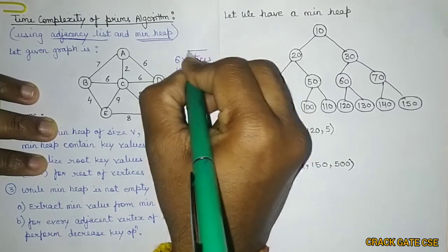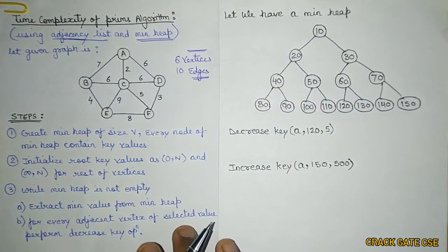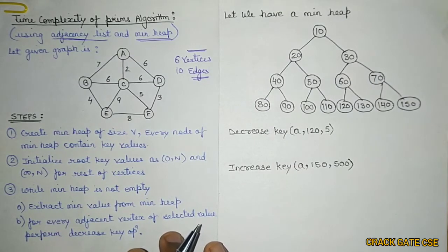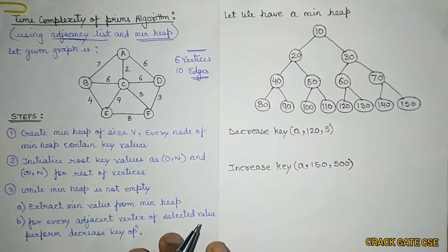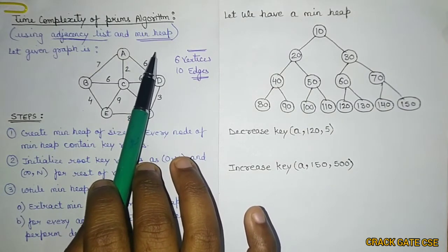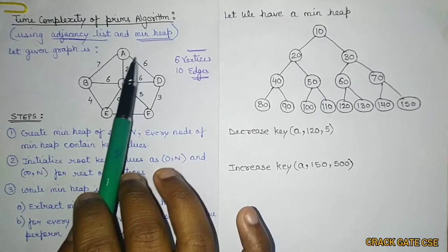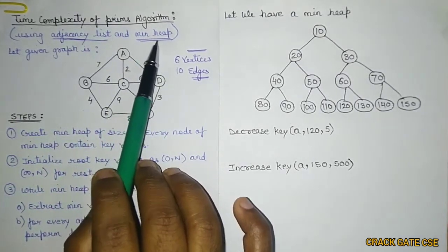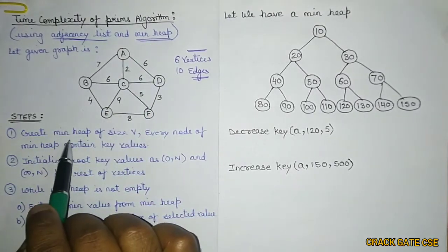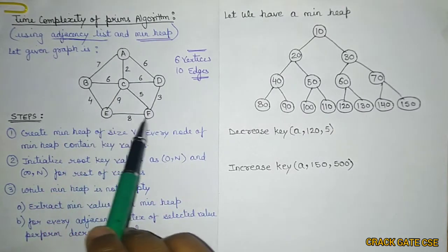What are the steps to find out the time complexity? We will do a detailed analysis so that you can find out how to get the time complexity using any data structure. Instead of min heap, there can be any sorted array or doubly linked list — you can easily determine the time complexity using any data structure. As we are dealing with min heap here, first of all we need to create a min heap of size V, because we have V number of vertices.